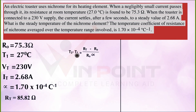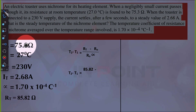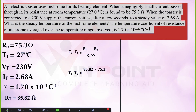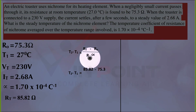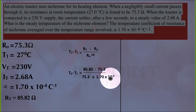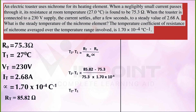Substituting all values into T₂ − T₁ = (Rt − R₀) / (R₀ · α): Rt is 85.82, R₀ is 75.3, and α is 1.7 × 10⁻⁴. Subtracting 85.82 − 75.3 and dividing by 75.3 × 1.7 × 10⁻⁴, we get T₂ − T₁ = 821.8. You can verify this by performing the subtraction and division.